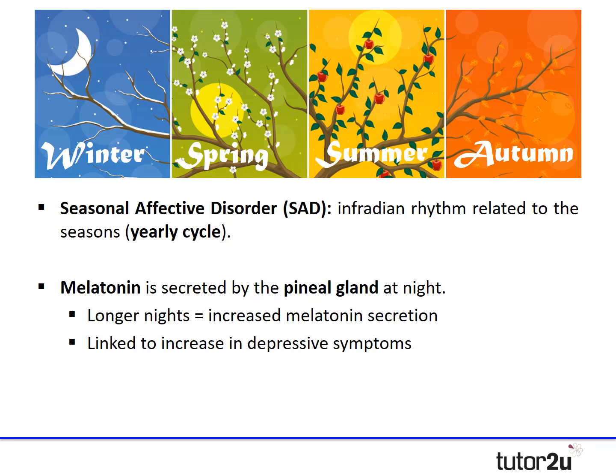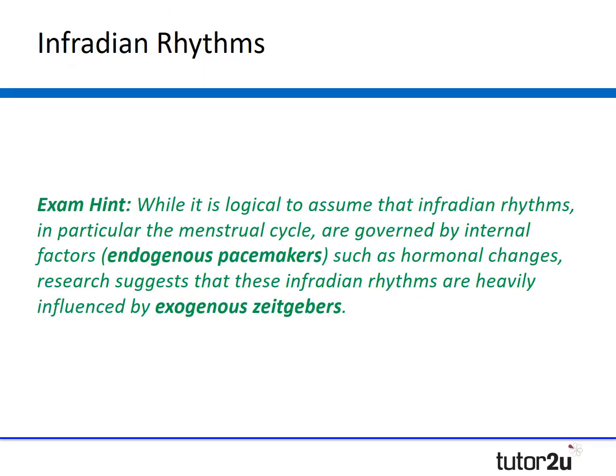It's useful to know a second example, although you certainly need at least one — it's sometimes easier for certain exam questions to have another example. To return to that exam hint: while it's logical to assume that infradian rhythms, in particular the menstrual cycle, are governed by internal factors such as hormonal changes, research suggests these infradian rhythms are heavily influenced by external factors. Let's look at some research around infradian rhythms and see how this plays out.